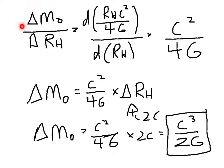If we take the rate of change of the mass of the universe as a function of the radius of the hyperverse, we get c² over 4G. Rearranging the equation, we find that delta m sub o is equal to c² over 4G times delta rh. But we know that delta rh is 2c. And we find c³ over 2G.